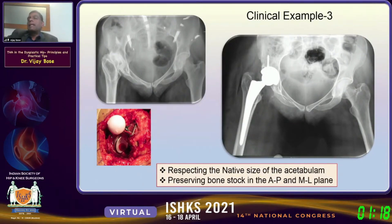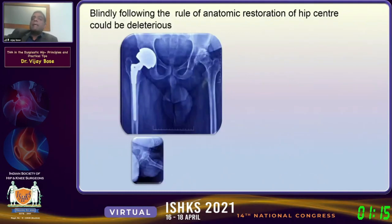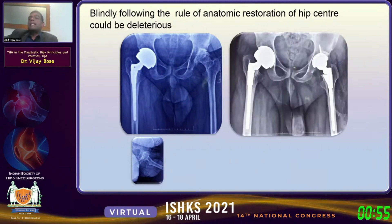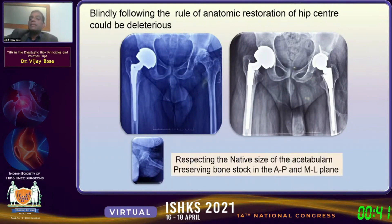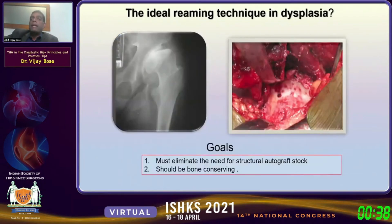The socket in dysplasia must never be larger than the socket on the normal contralateral side. Here is a patient referred to me where the first side was done elsewhere: the surgeon brought the cup to the anatomic center but reamed away half the pelvis in the AP direction — not visible on AP X-ray. The second side I did is 10 millimeters smaller. These days we accept a moderately high hip center, preserve bone in AP and medio-lateral planes, and think of future surgery.